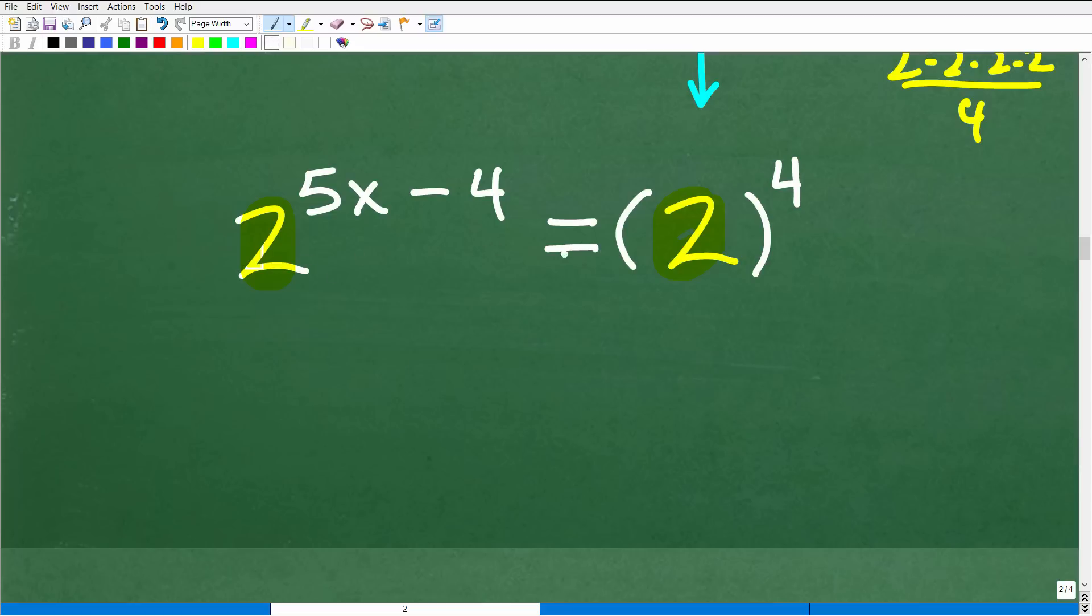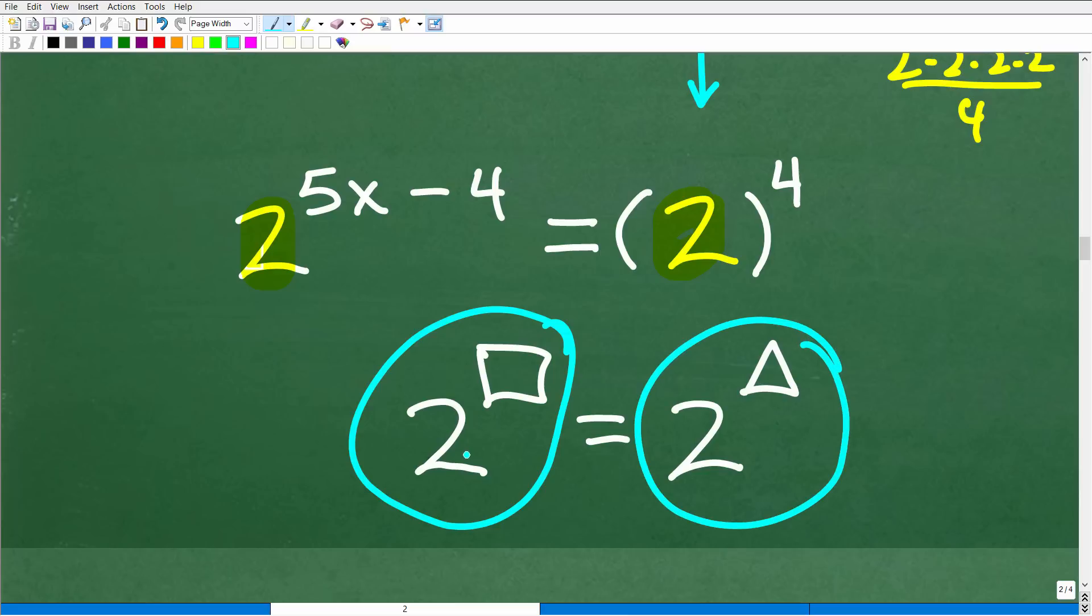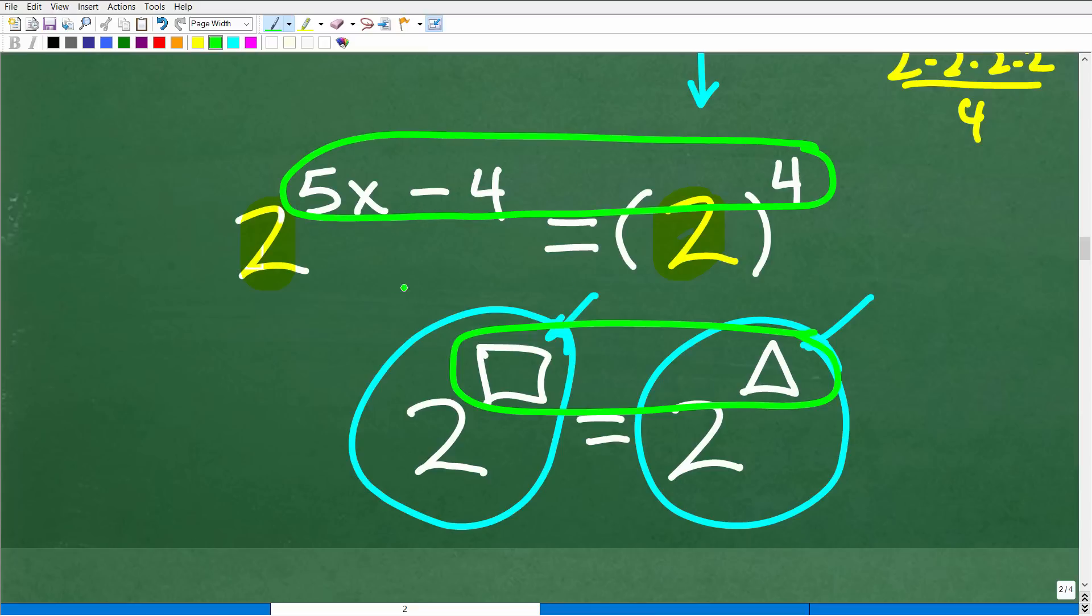Let me show you this. We're not caught up with these expressions. If I have 2 to the box is equal to 2 to the triangle, well, if this value is equal to this value and I'm taking 2 to some power and that's whatever power that is, it's the same thing as 2 to this power, well, what does that mean? It means that these exponents are the same. They must be the same if this is true. And that's the case here. These exponents, we can equate these exponents because now the bases are the same.